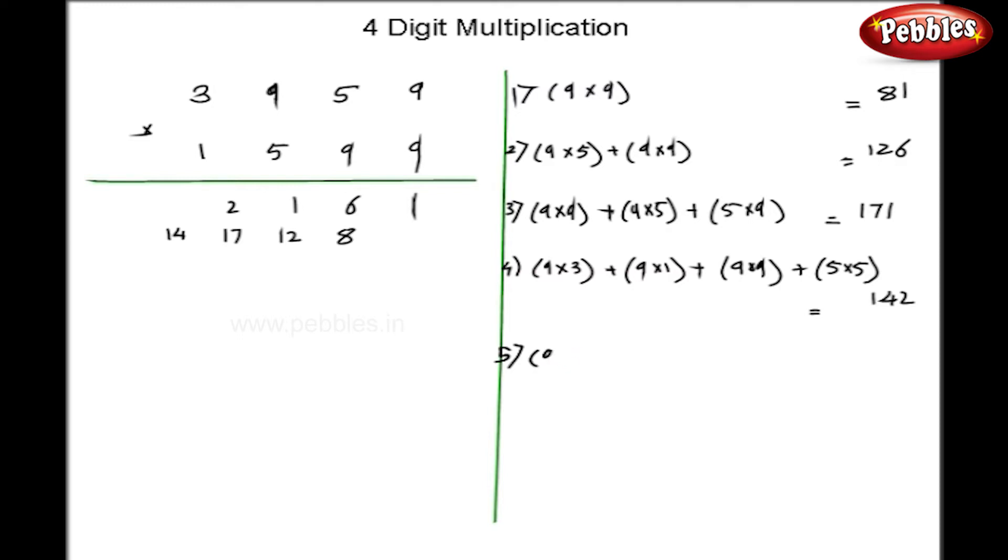At the fifth step, 9 into 3 plus 5 into 1 plus 9 into 5. So, my answer is 77. So, 7 as a carry over and 7 in first row.